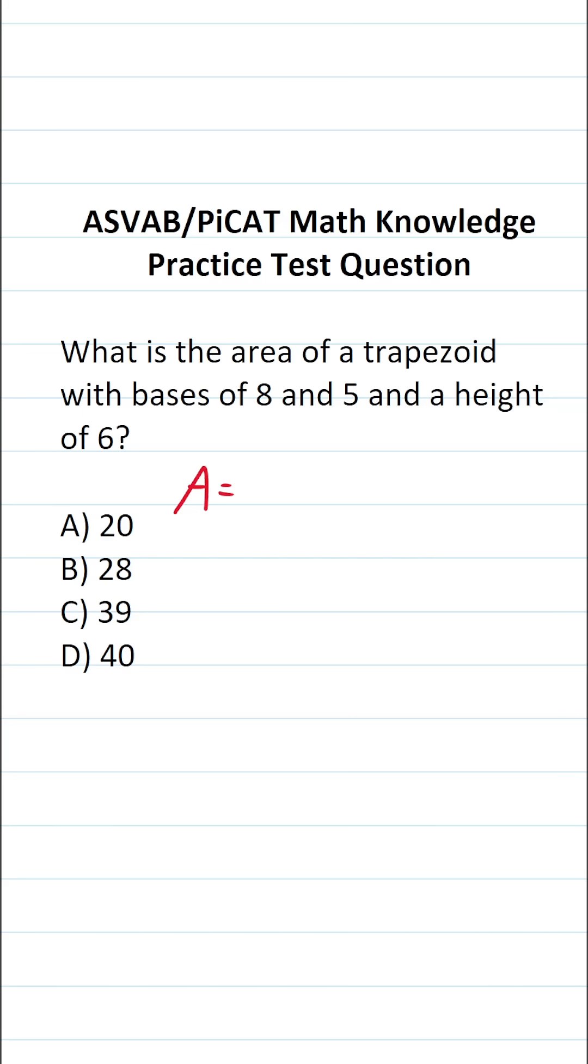The formula to calculate the area of a trapezoid is going to be one half base 1 plus base 2 times height. And as it happens, we know all these values. We can let base 1 be 8 and base 2 be 5, and we know our height is 6. So let's plug these values in and solve accordingly. This becomes 8 plus 5 times 6.